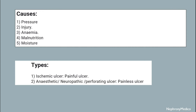The causes may be pressure injury, anemia, malnutrition, or moisture. Types include ischemic ulcer, anesthetic or neuropathic ulcer, and trophic ulcer. Neuropathic ulcers are usually painless, while ischemic ulcers are painful.